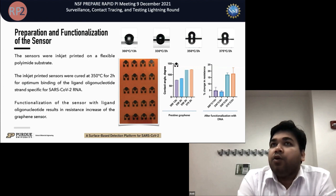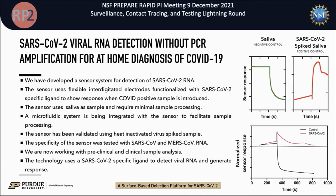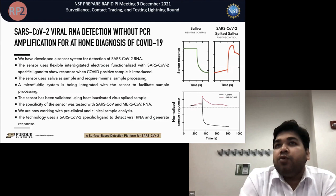The changes happening yield a signal-on and signal-off response. The green line in the top right corner represents a negative control sample, and the red one is for a positive sample. We are using flex material inkjet-printed sensors going forward as a method for testing other RNA viruses as well. We are very excited that it really works and may help build an at-home device.